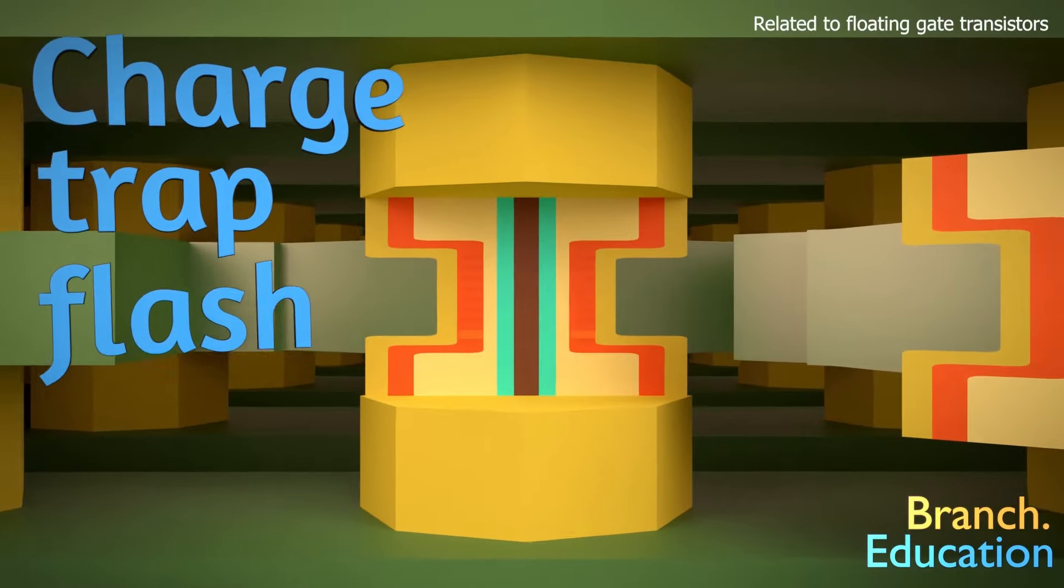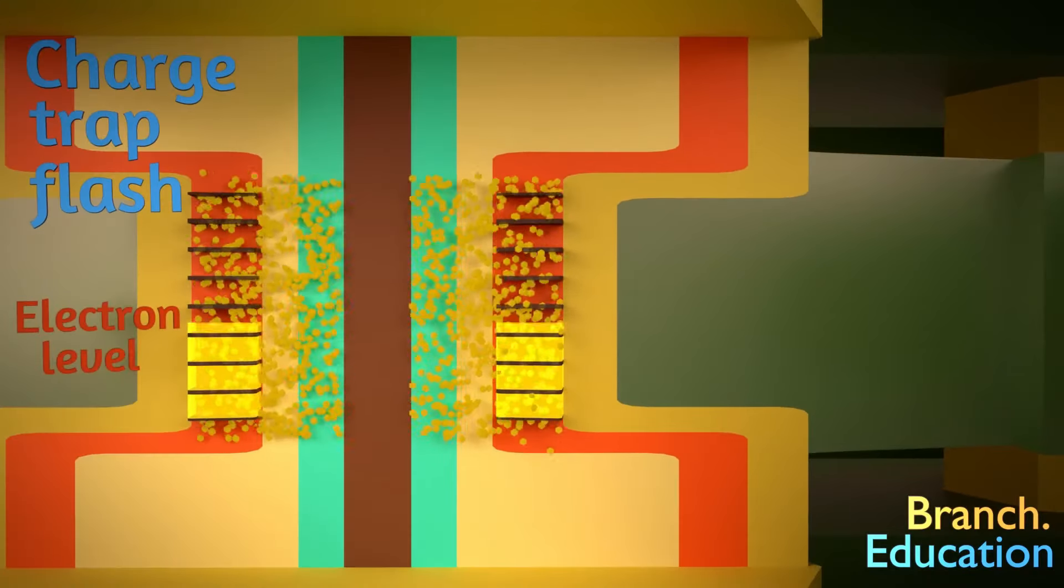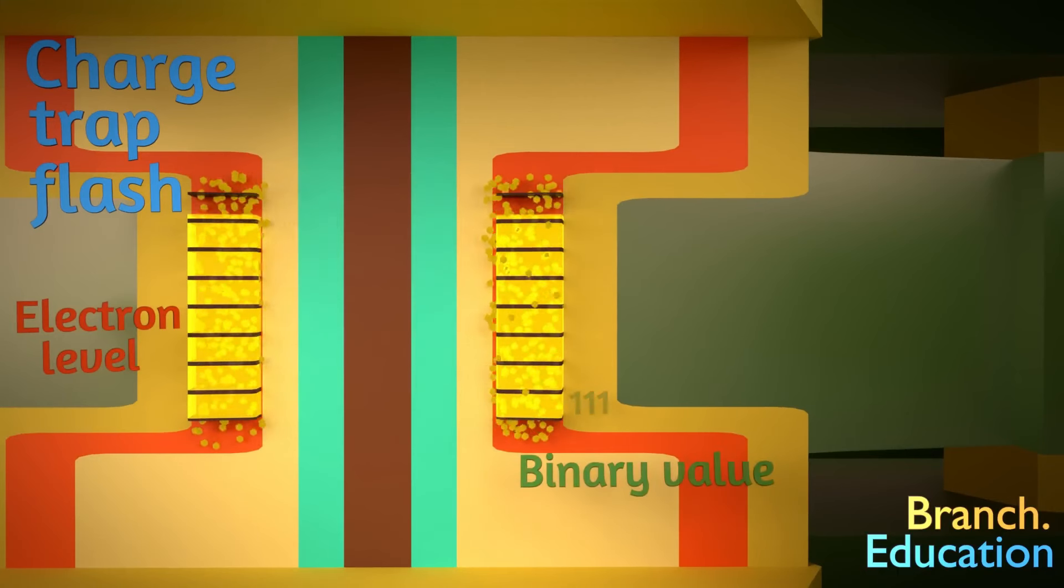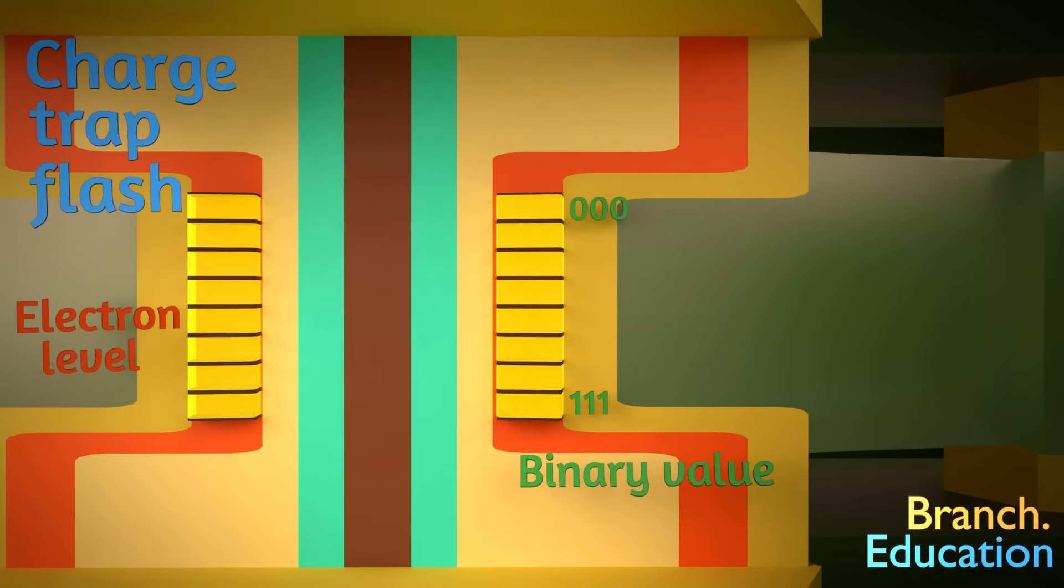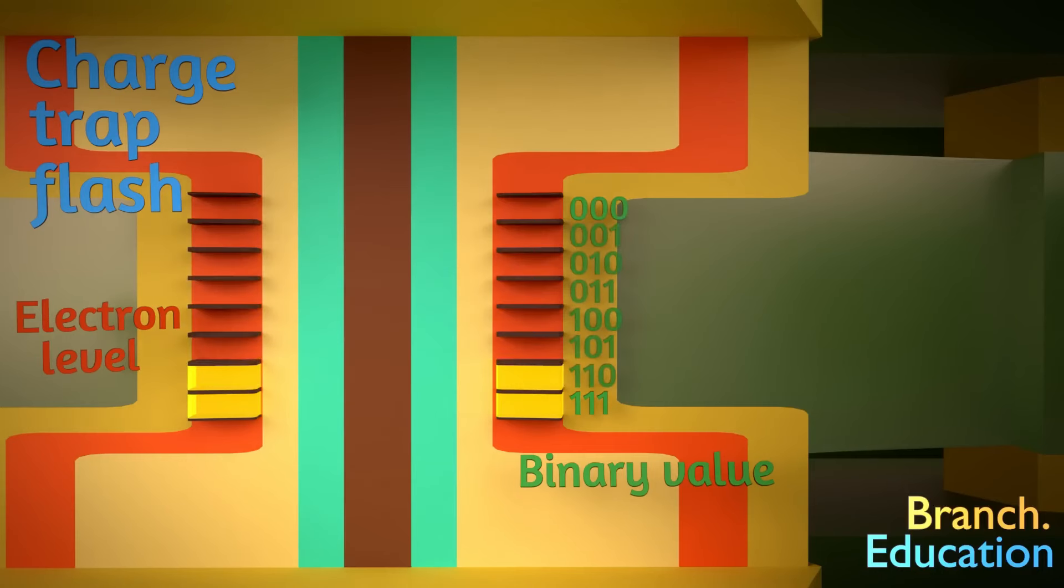This memory cell stores 3 bits of information by trapping different levels of electrons on a charge trap. Very few extra electrons are a 1, 1, 1, while a lot of electrons are a 0, 0, 0. And the other levels of trapped electrons have other 3-bit designations.